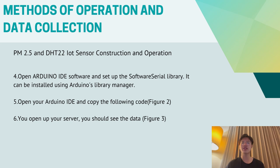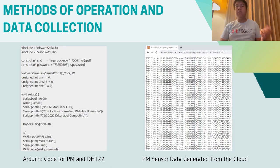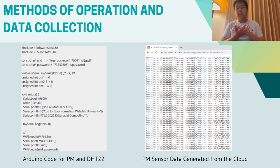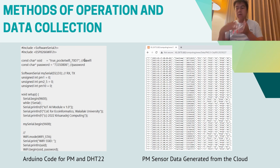Open Arduino IDE software and set up the software serial library, which can be installed using the Arduino library manager. Open your Arduino IDE and copy the following code. Open up your serial monitor and you should see the data. Now we will talk about the method and operation of data collection. The first thing is the Arduino code for the PM and DHT sensor that we used for receiving the data. Next is the data from the PM sensor that we collected and entered into our Excel.